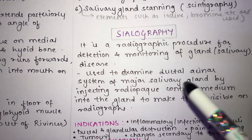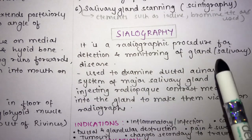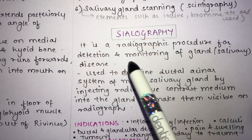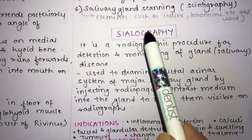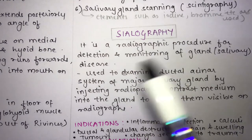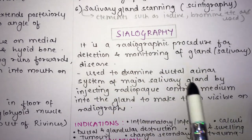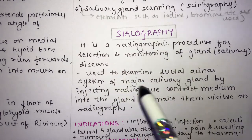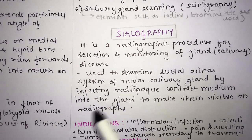Sialography is a radiographic procedure for the detection and monitoring of salivary gland disease. It is used to examine the ductal and acinar system of the major salivary glands by injecting a radio-opaque contrast medium into the gland to make them visible on the radiograph.